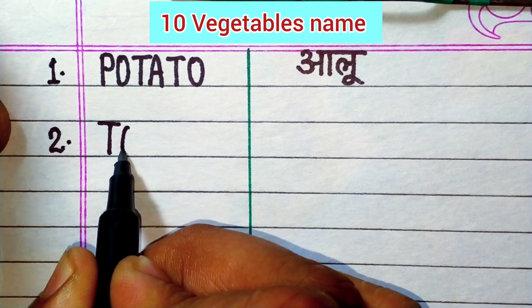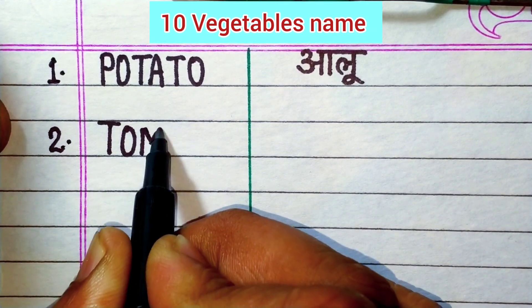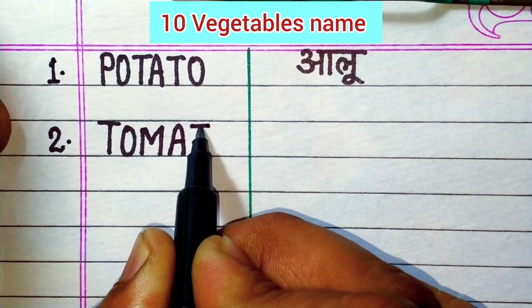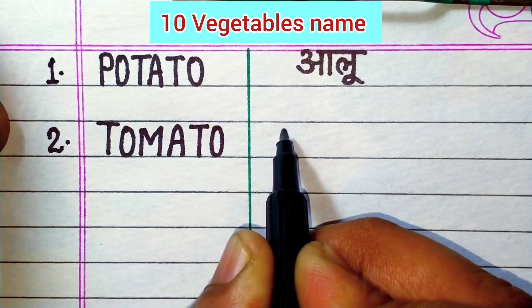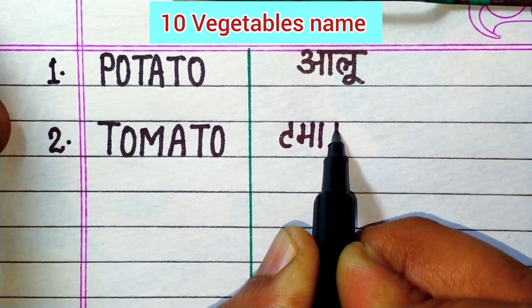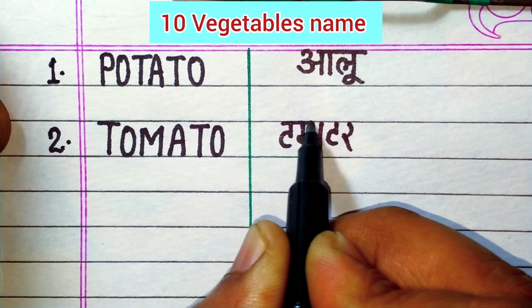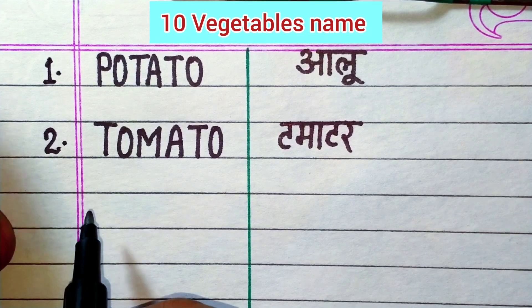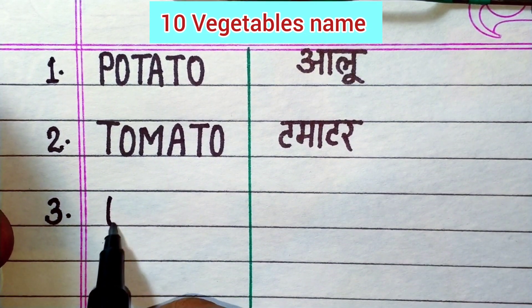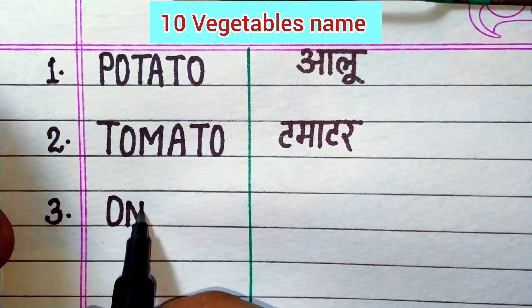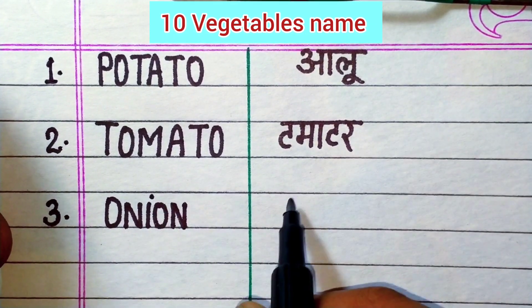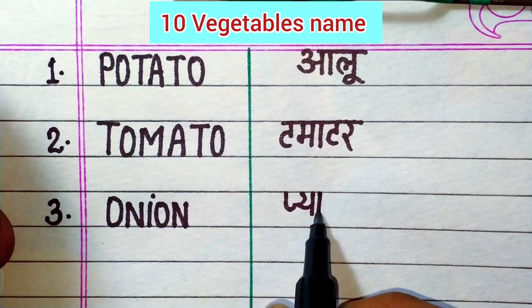T-O-M-A-T-O, tomato. Tomato means tomato. Next: O-N-I-O-N, onion. Onion means piyaj.